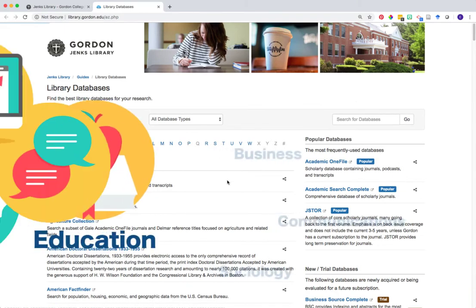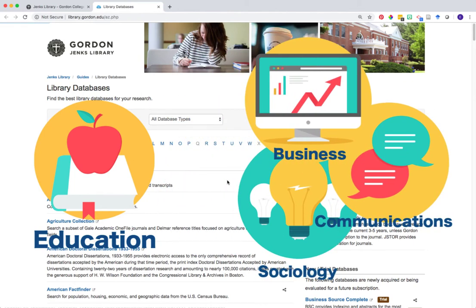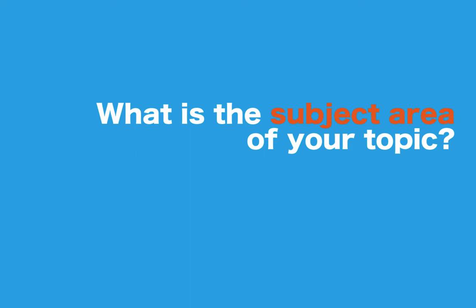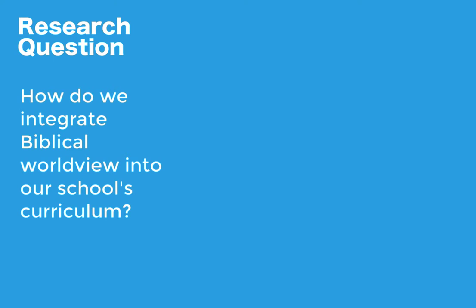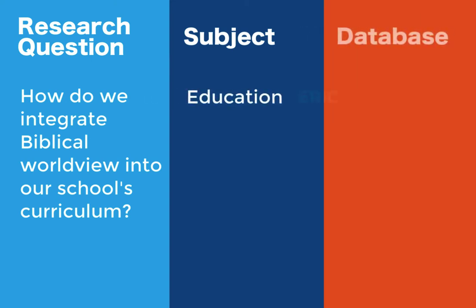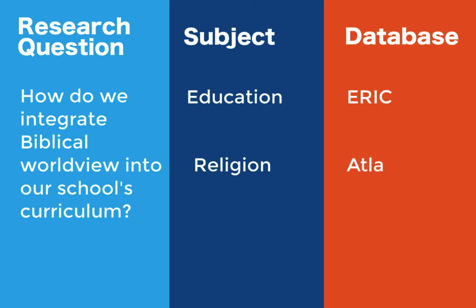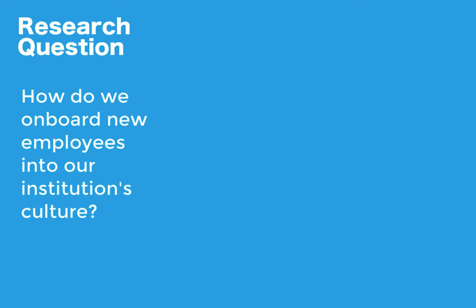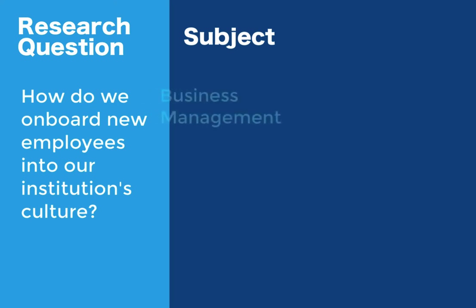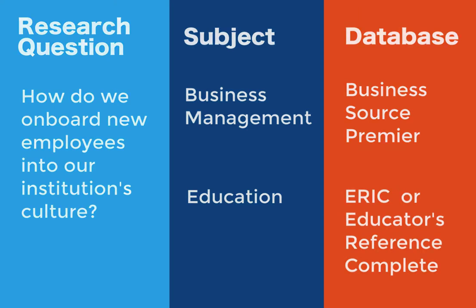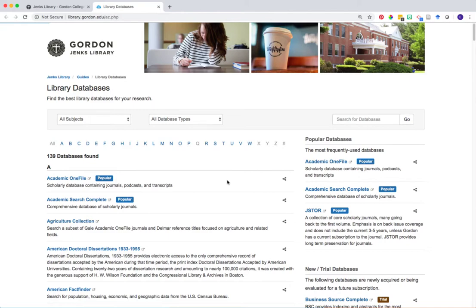Library databases can either be subject specific or multidisciplinary. To choose the best resource, think about the subject area or broad topic area to which your research question applies. For example, if you're interested in how to effectively integrate biblical worldview into your school's curriculum, databases covering education such as ERIC or religion such as ETLA would be good places to begin. Or if you're researching effective strategies for onboarding new employees, databases covering business management such as Business Source Premier, or education such as ERIC or Educators Reference Complete, might be best. Let the subject area of your research drive which database you select.